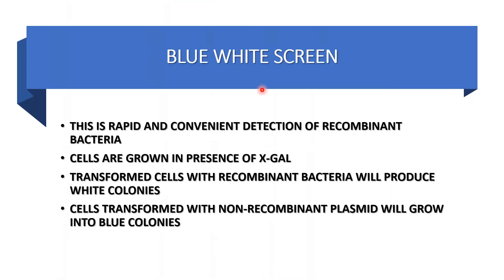Blue-white screening is the most rapid and convenient method for isolation and selection of recombinant DNA or recombinant bacteria. Cells are grown in the presence of X-gal, which is basically galactose linked to indole. The enzyme used is beta-galactosidase. In the presence of this enzyme, the substrate will turn blue in color. We select the colonies which have turned white in color and reject the blue colonies. So transformed cells will have white colonies, and those white colonies can be selected and further used for other experiments.